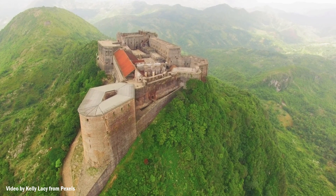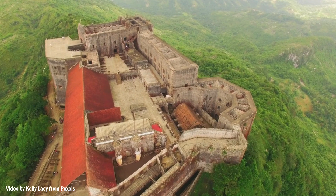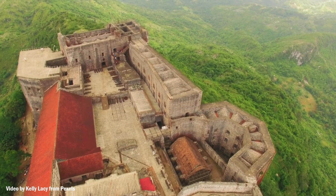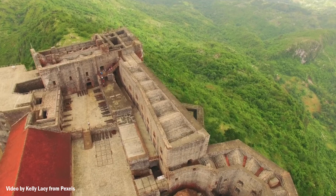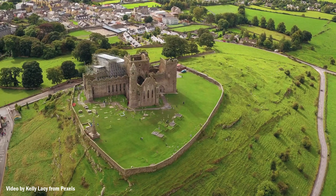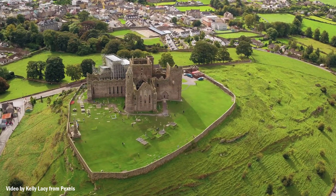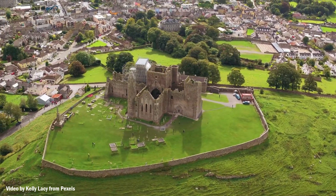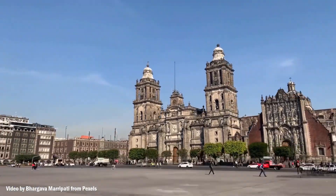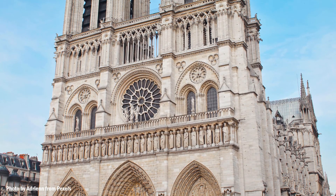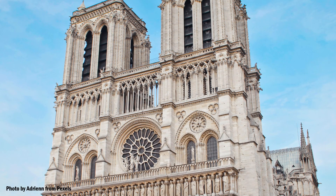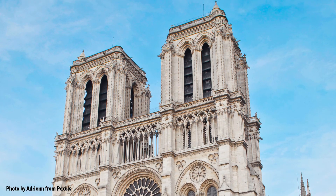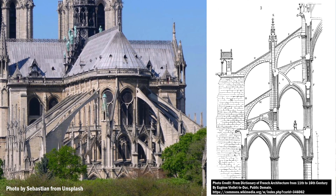During the post-classical history or middle ages, the construction of castles became popular in Europe. Castles are fortified structures that were common in that era to protect the residents from military invasions and also acted as a symbol of power. Many cathedrals were also built in this period. Notre Dame in Paris was completed by 1345. The arched roof in this structure is supported by a series of flying buttresses without the need for thick continuous support walls.